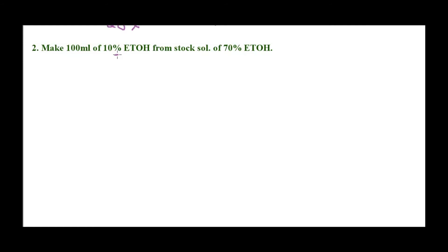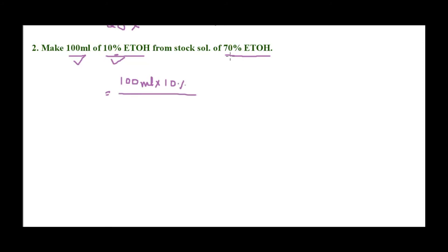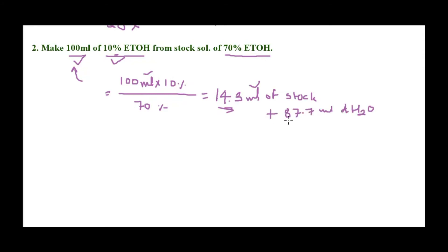Next example with percentage concentration: make 100 ml of 10% ethanol from a stock solution of 70% ethanol. Using the formula: final volume (100 ml) × final concentration (10%) ÷ stock concentration (70%) = 14.3 ml of stock. Make this up to 100 ml by adding 85.7 ml of distilled water to get 100 ml of 10% ethanol.